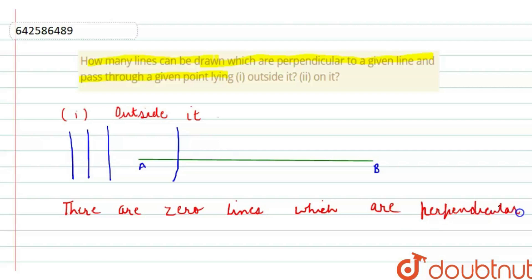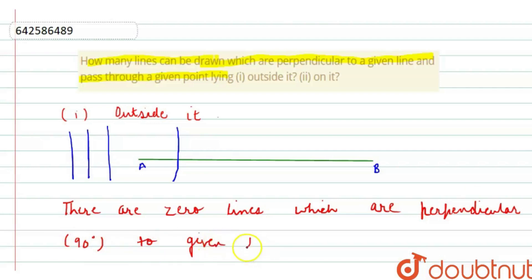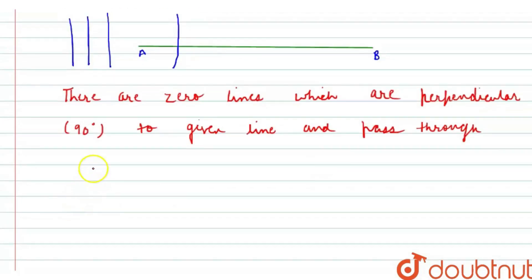That is, 0 lines at 90 degrees to a given line, passing through a point outside it.